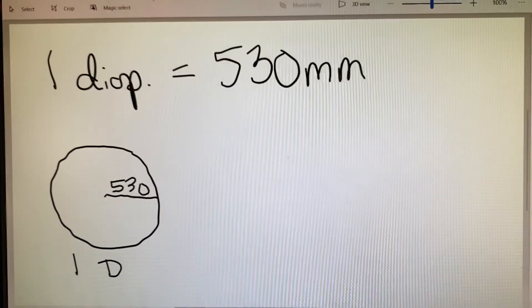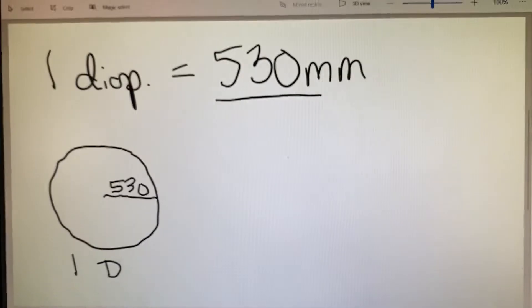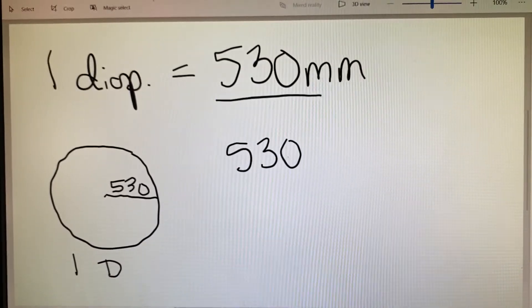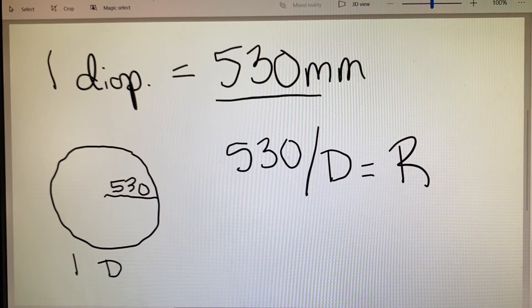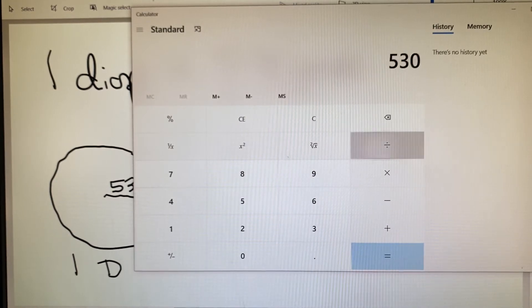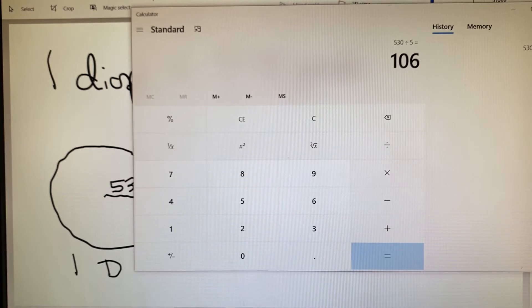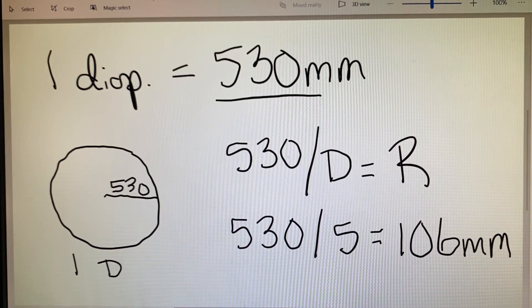The formula to determine radius of curvature is the standard of 530. So 530 divided by power equals the radius. If we were to use a 5-diopter lens as our example, 530 divided by 5 equals 106. So we would say that the radius of curvature of a 5-diopter lens is 106 millimeters.